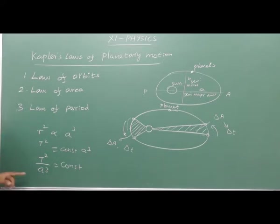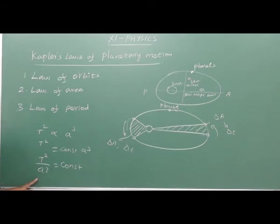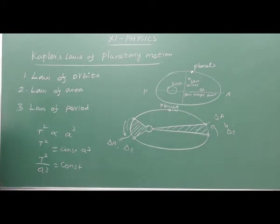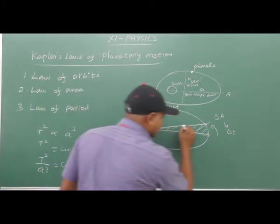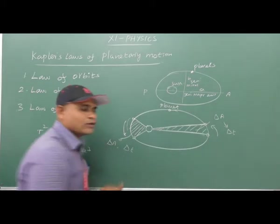Here, T is the time period of revolution for the planet, and A means the semi-major axis. This law implies that as the distance of the planet from the sun increases, the time period also increases, but not at the same rate.